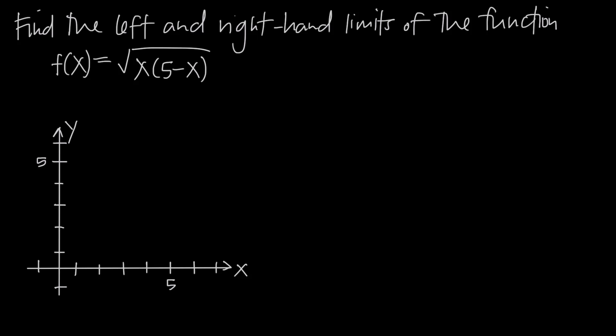In this video, we're talking about one-sided limits — left and right-hand limits, or the limit of a function as we approach from the left or negative side, or the right or positive side. Let's distinguish between one-sided limits and the general limit. At any given point, let's say we want to take the limit of this function as x approaches the number 4 — the limit as x goes to 4 of f(x) = √x · (5 − x).